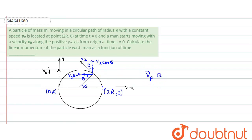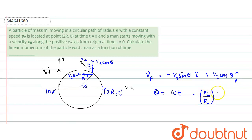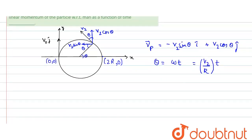The velocity of the particle in vector form is: minus v2 sinθ in the i-cap direction (negative x-axis) plus v2 cosθ in the j-cap direction. Here theta equals ωt, and the angular velocity ω equals v2/r, so theta equals (v2/r)·t.